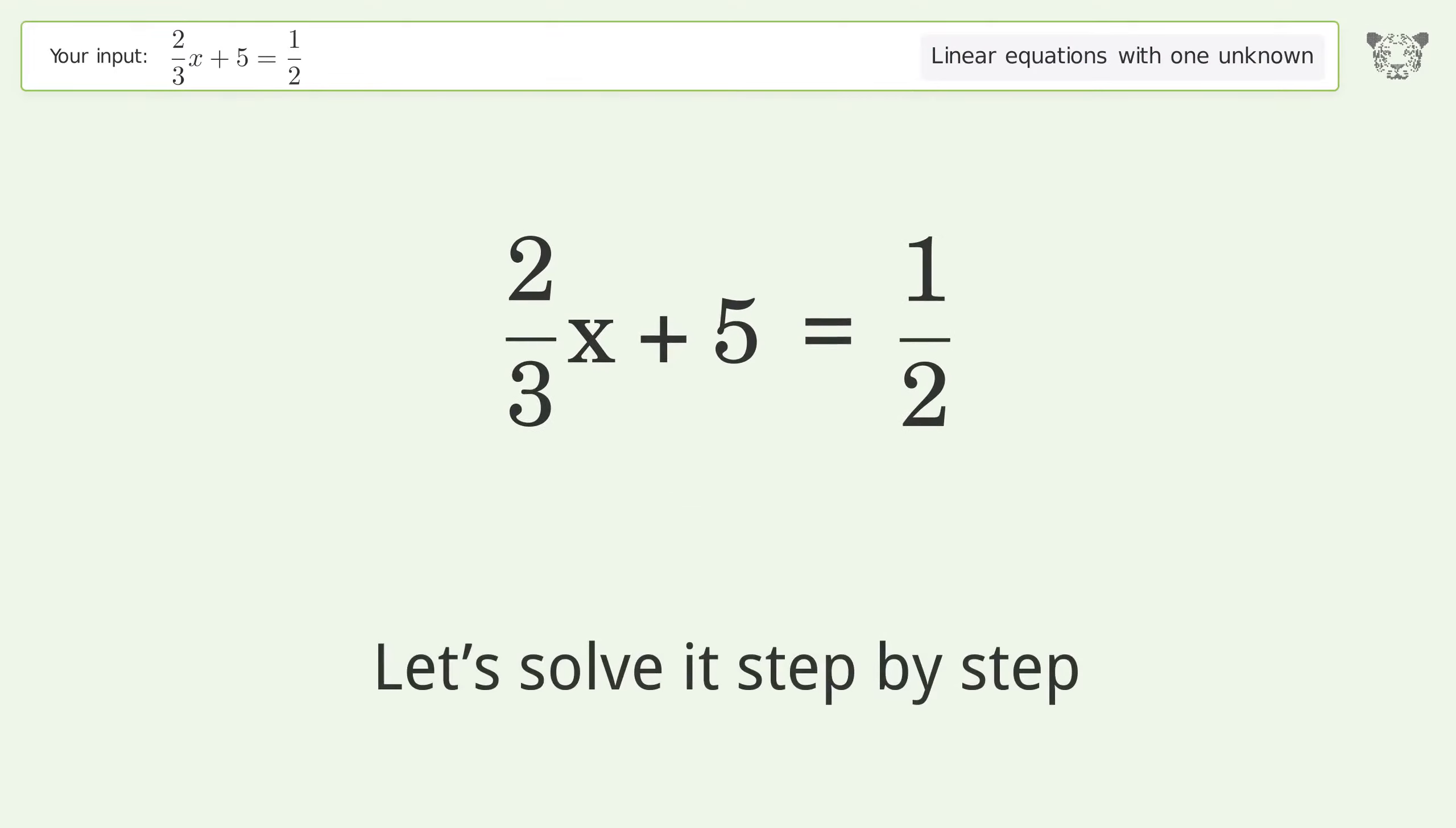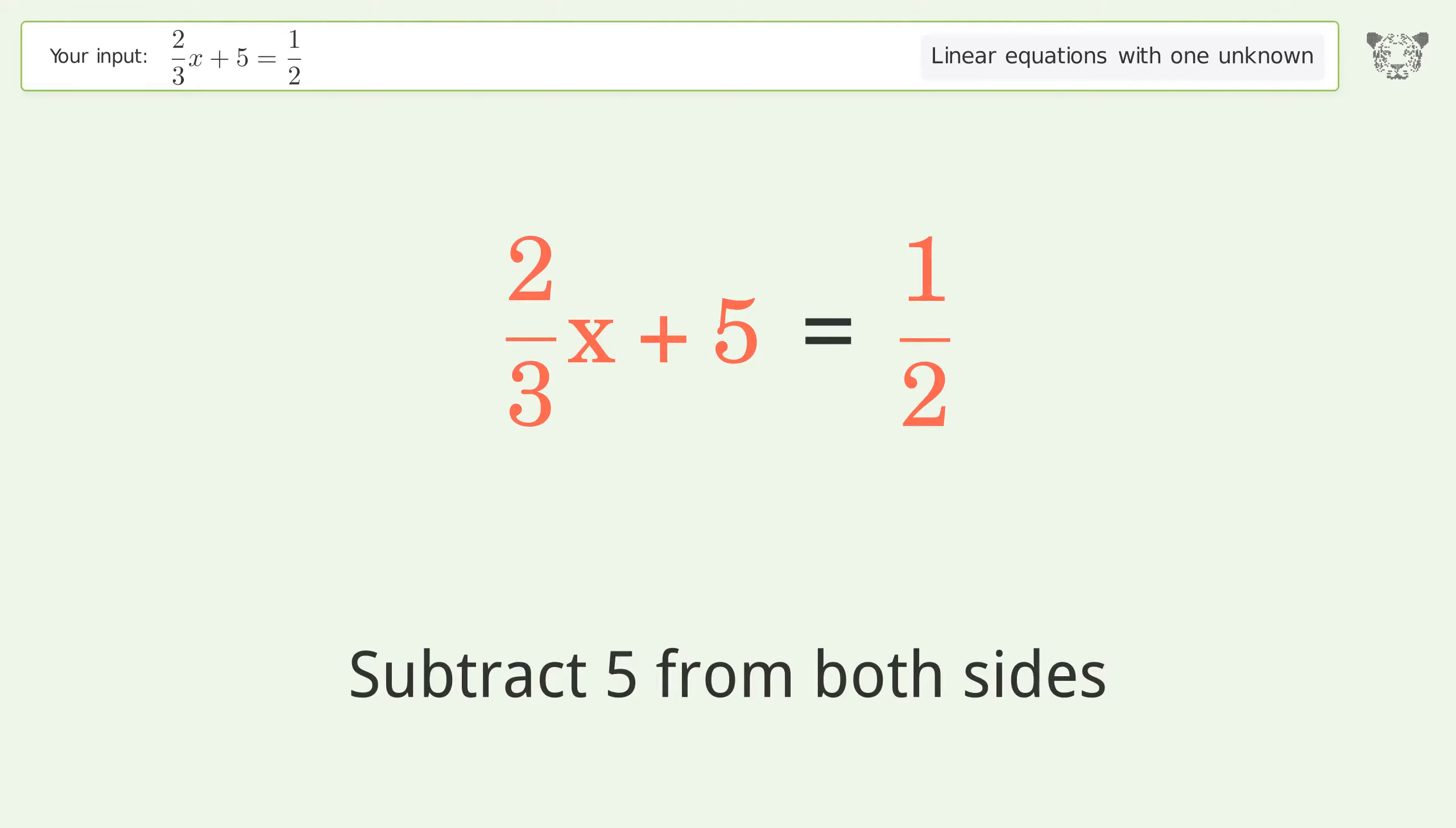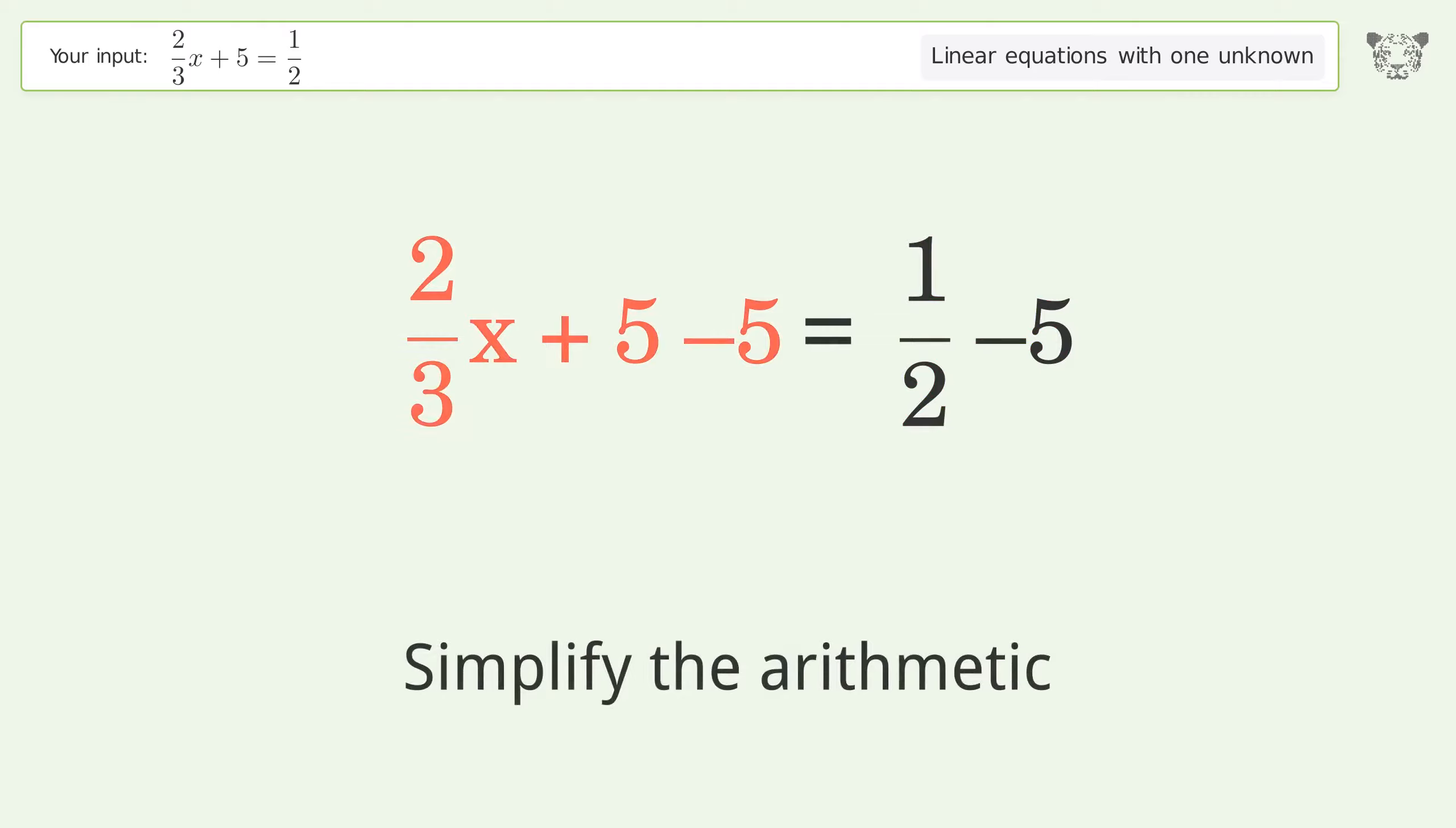Let's solve it step by step. Group all constants on the right side of the equation. Subtract 5 from both sides, then simplify the arithmetic.